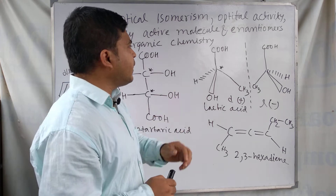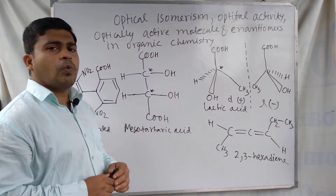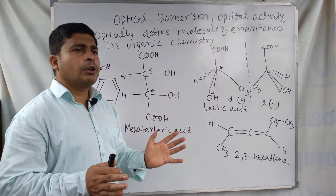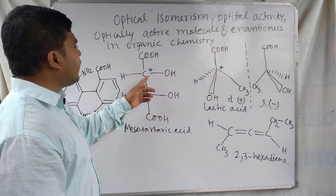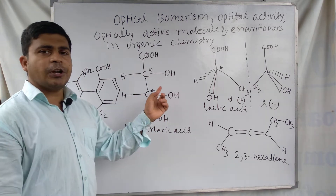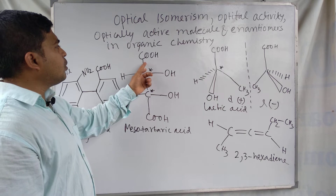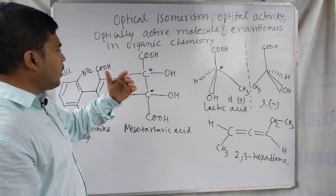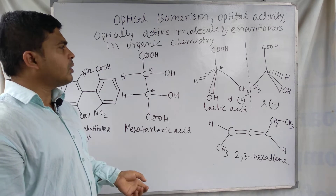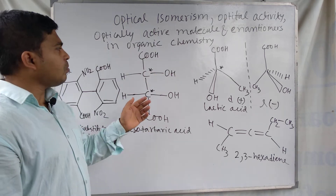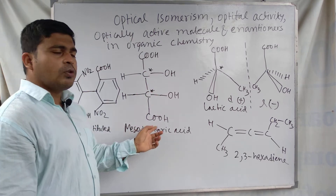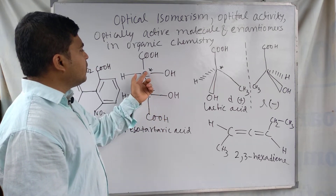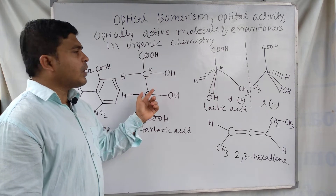If a molecule has more than one chiral carbon — where chiral carbon means a carbon attached to four different groups or types of atoms — it can behave differently. For example, mesotartaric acid has two chiral carbons. Despite having two chiral carbons (an upper part and a lower part), the molecule is a meso compound, meaning it is optically inactive overall.